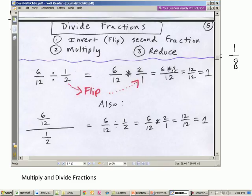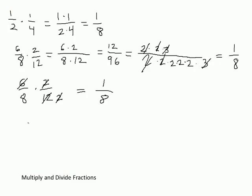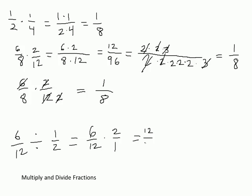So it becomes 6 times 2 over 12 times 1. And then anything divided by anything is 1. So we have 6 divided by 12 and then flip the second fraction to get 2 over 1, which is 1 half. That equals 12 over 12 — anything divided by itself is 1. All right, let's go over to Excel.